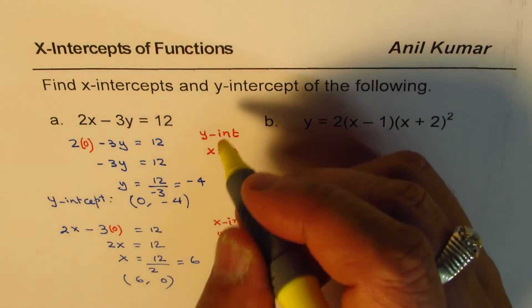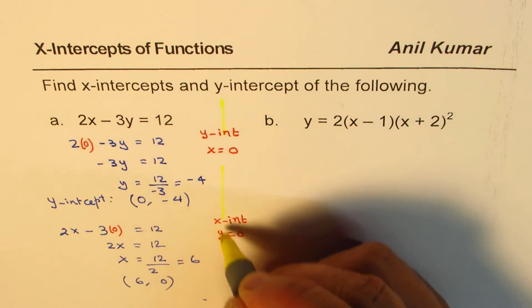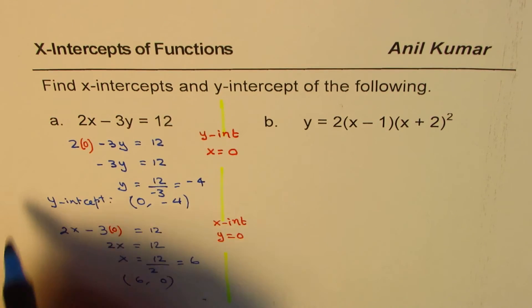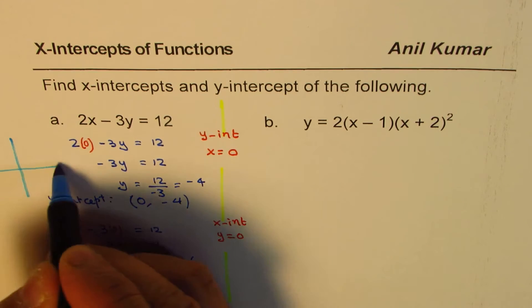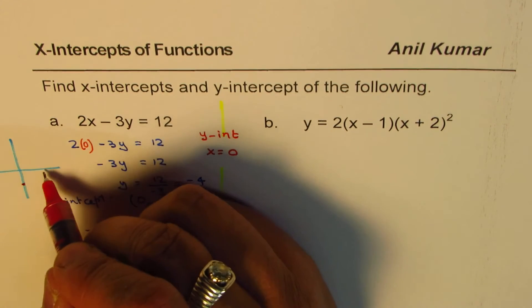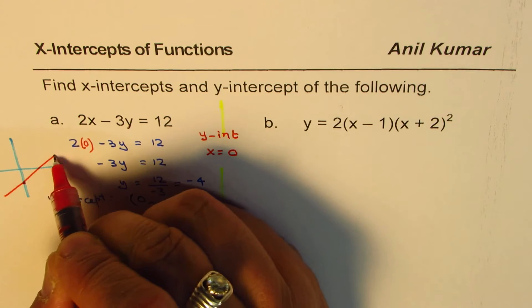So that is how you could find x and y-intercept when we are considering a straight line. Some of you could also graph this line approximately kind of like this. So what we got here is y-intercept of minus 4.